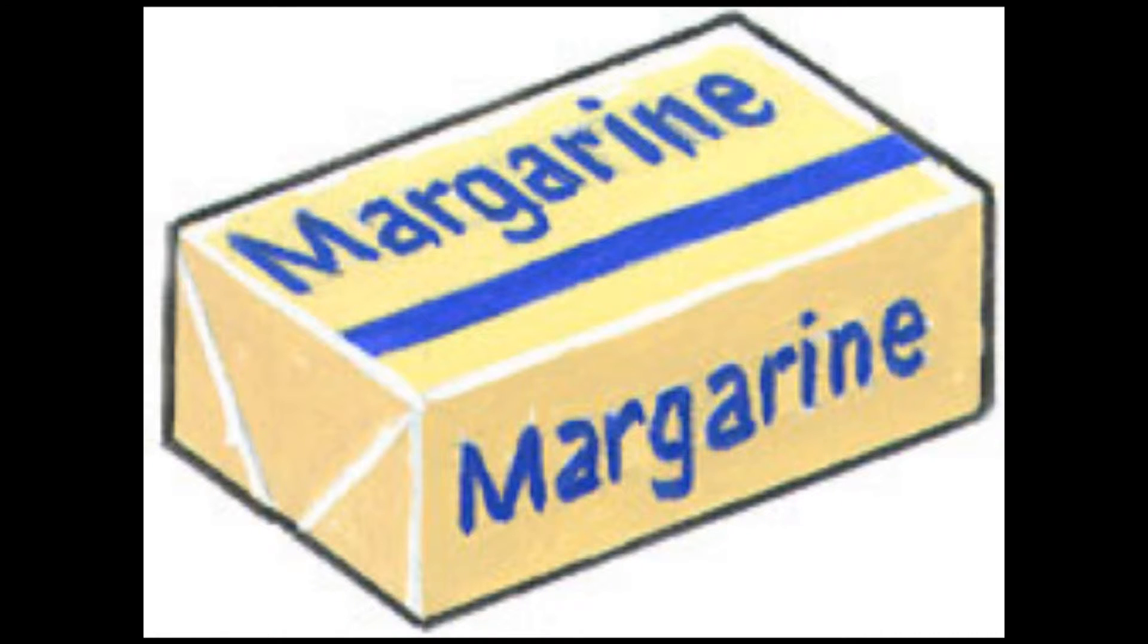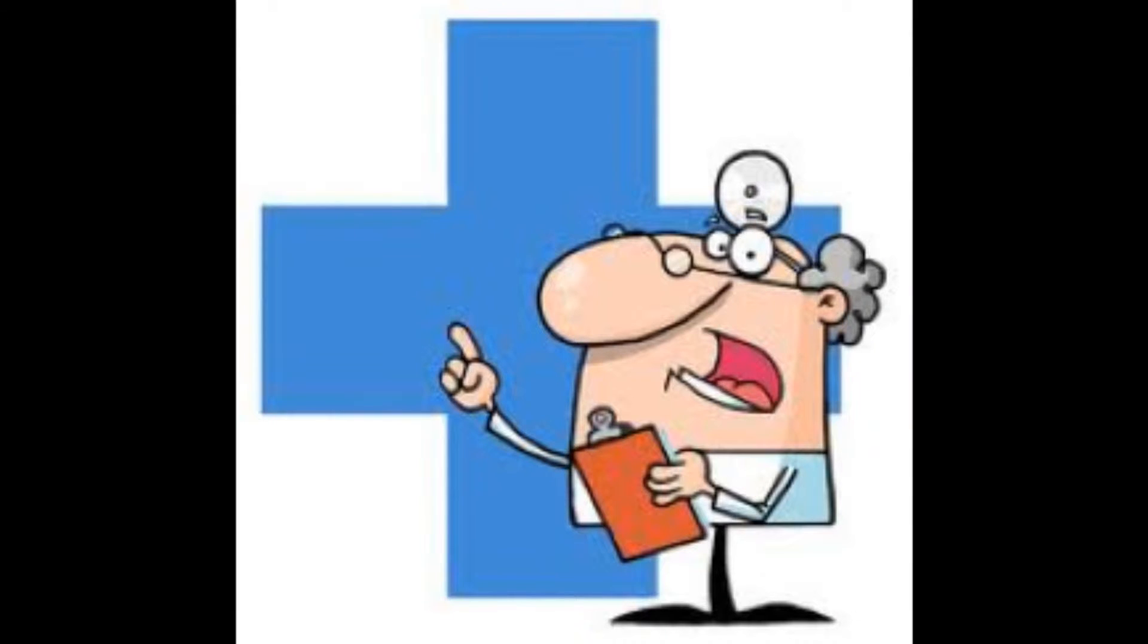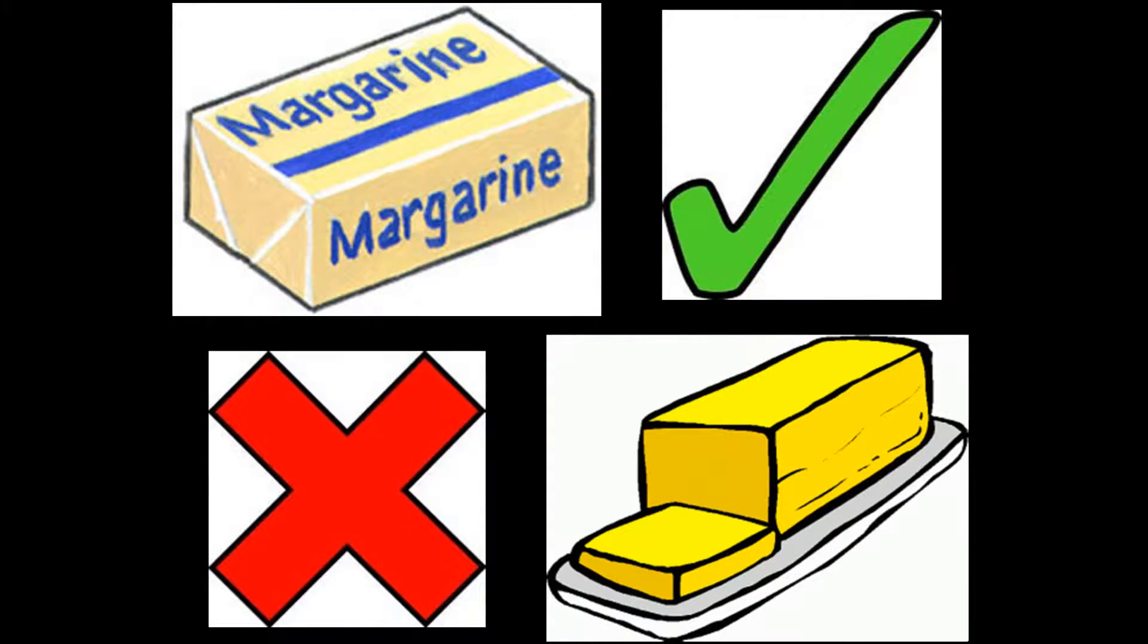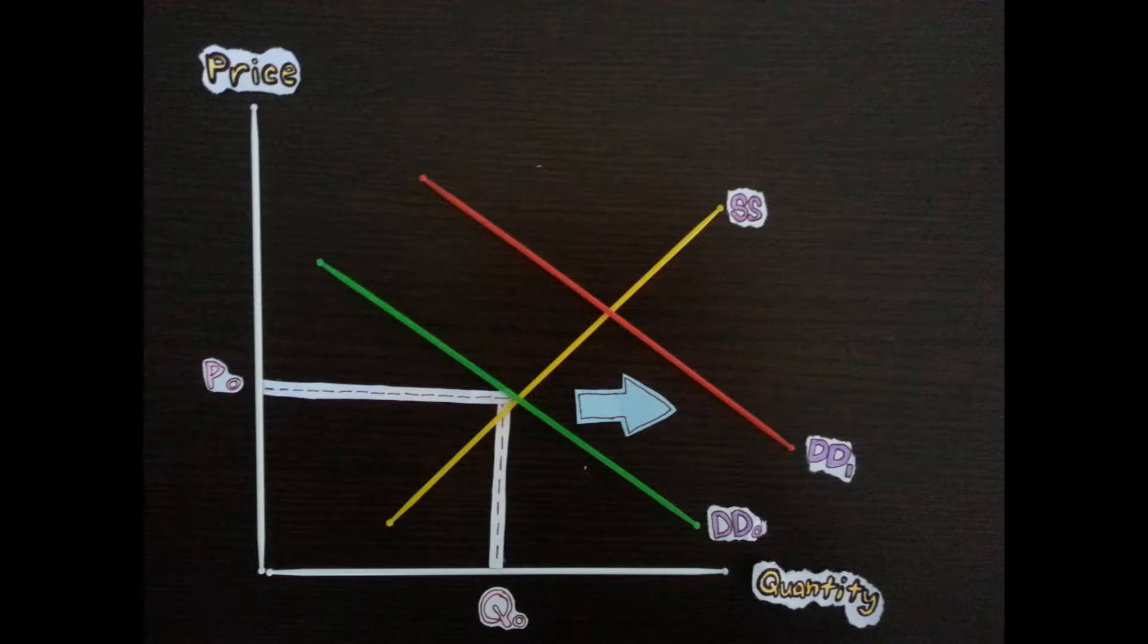We will use the example of margarine. When consumers become more health conscious, they choose healthier alternatives such as margarine over butter. This increases the demand of margarine.